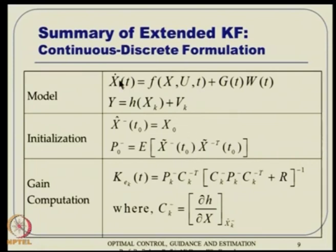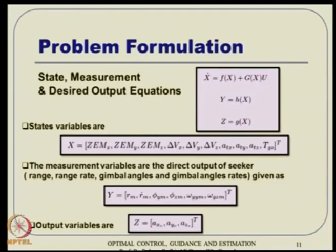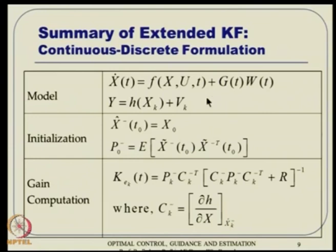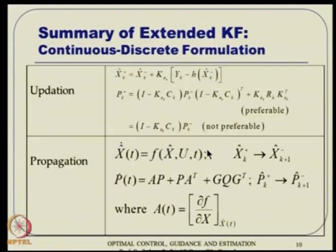The dynamics are control-affine: x-dot equals f(x) plus g(x) times u. This is your state equation, and y is the sensor output — these two must be written for the EKF. Also, the desired outputs z — the lateral accelerations — are computed as an algebraic function of the estimated states. Once the state equation and output equation are formulated, initial conditions and covariance are guessed and the filter runs. The noise terms W and V themselves are not designed explicitly; what matters are their covariances Q and R.